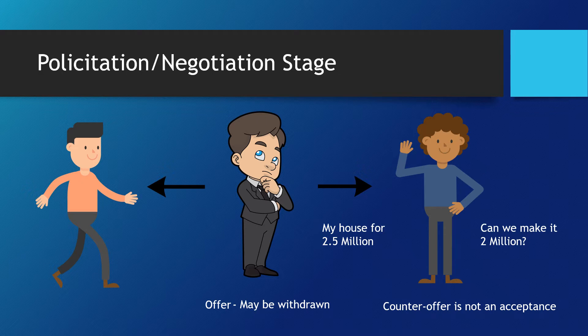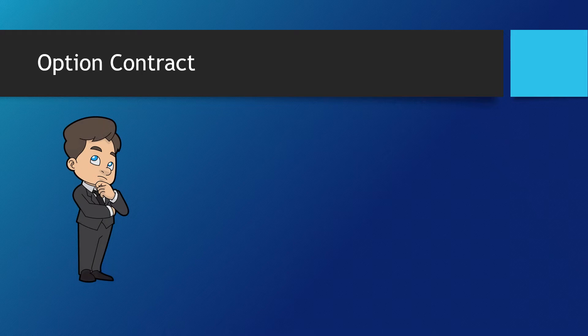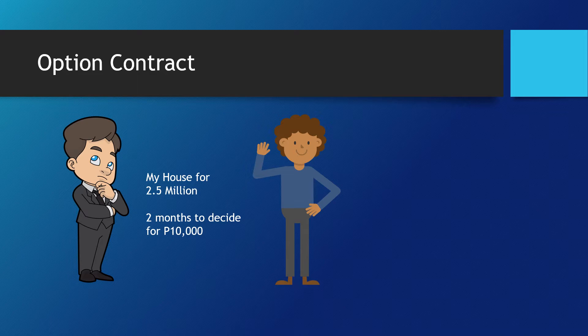John can also enter into an option contract with Mark. An option contract is a preparatory contract in which one party grants to the other, for a fixed period and under specified conditions, the power to decide whether or not to enter into a principal contract. It binds the party who has given the option not to enter into the principal contract with any other person during the period designated, and within that period to enter into such contract with the one to whom the option was granted if he should decide to use the option.